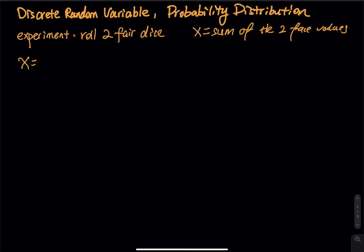In the previous video, we talked about the basic concept of discrete random variable and continuous random variable, and I gave you a definition of random variable. In this video, I am going to give you a simple example to explain discrete random variable and probability distribution. The previous video and the next couple of videos are all about discrete random variable. After we finish discrete random variable, we will start another set of videos for continuous random variable.